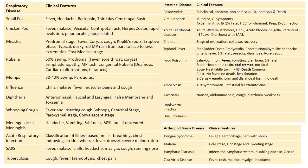This is about the clinical features of smallpox. It was eradicated in 1980. The clinical features are fever, headache, back pain, and on the third day of fever there will be a centrifugal rash, distributed more towards the extremities. But in chickenpox it is a centripetal vesicular rash.